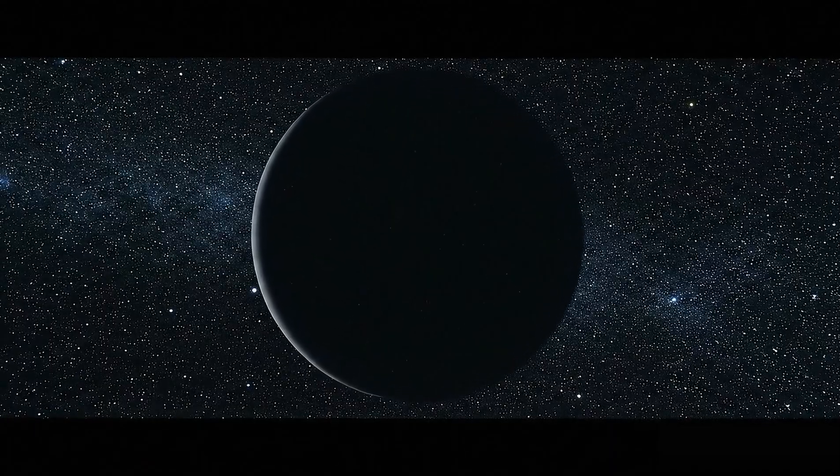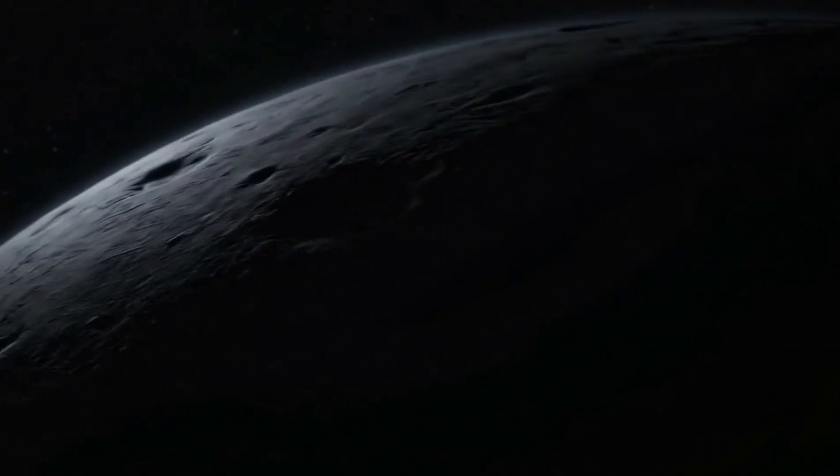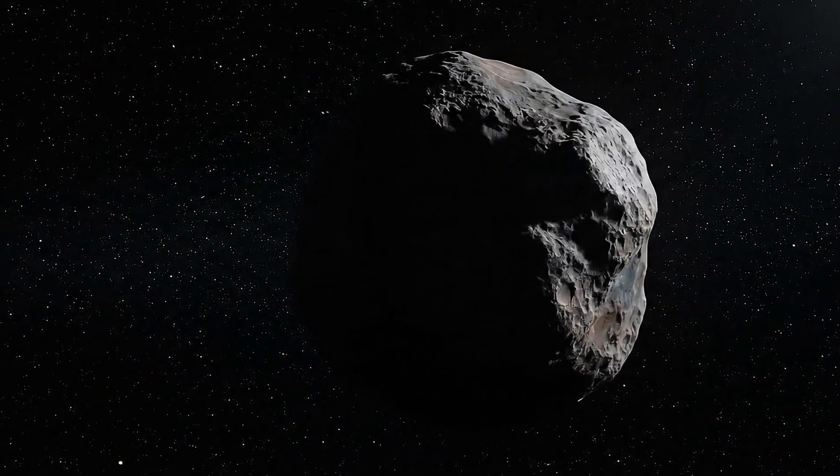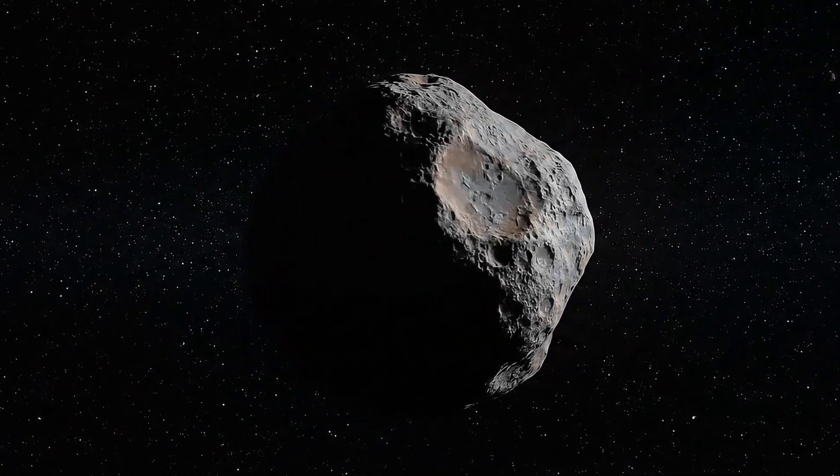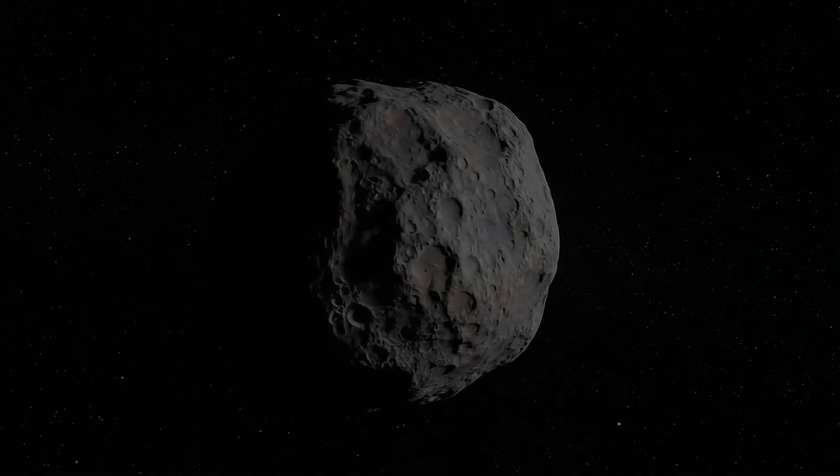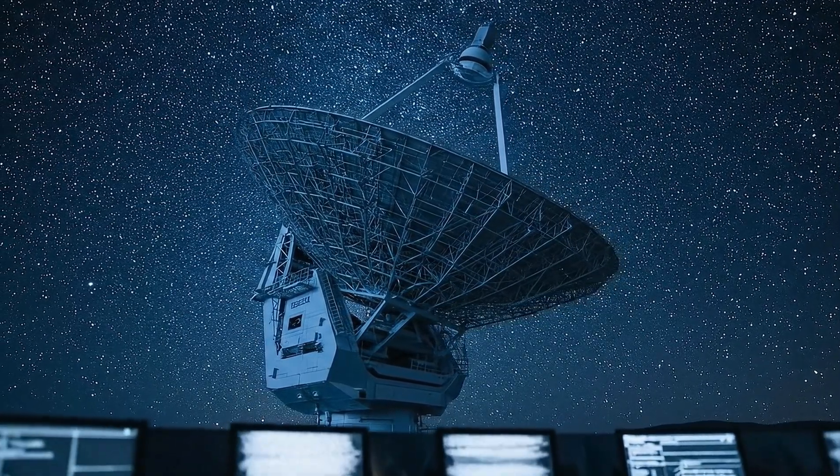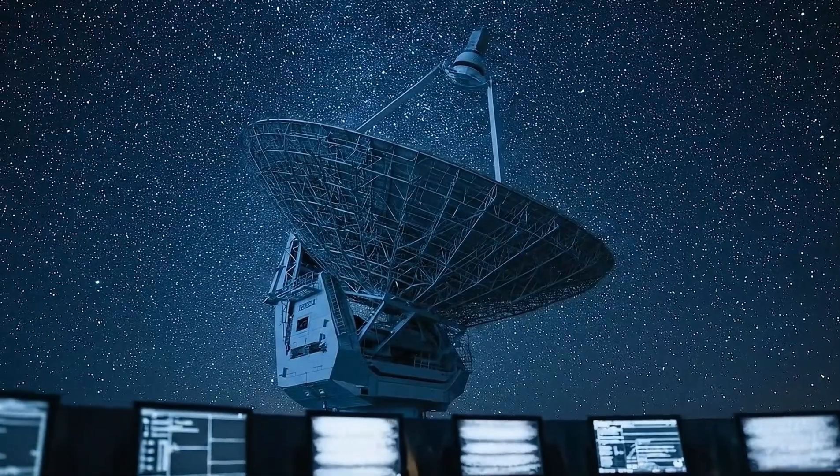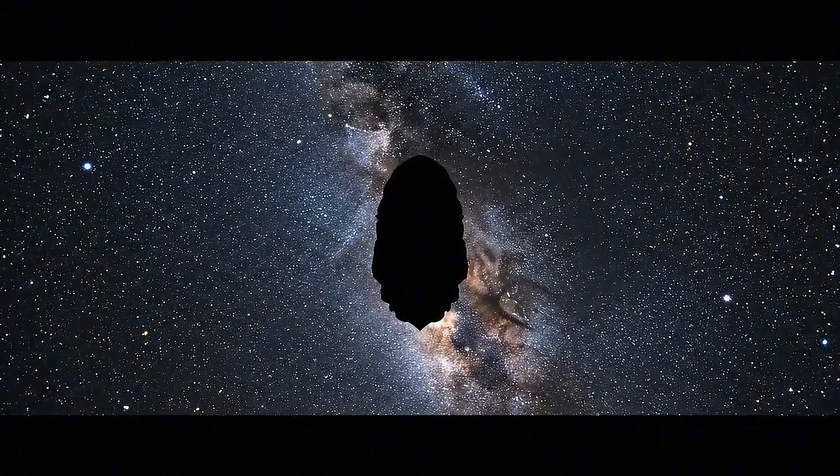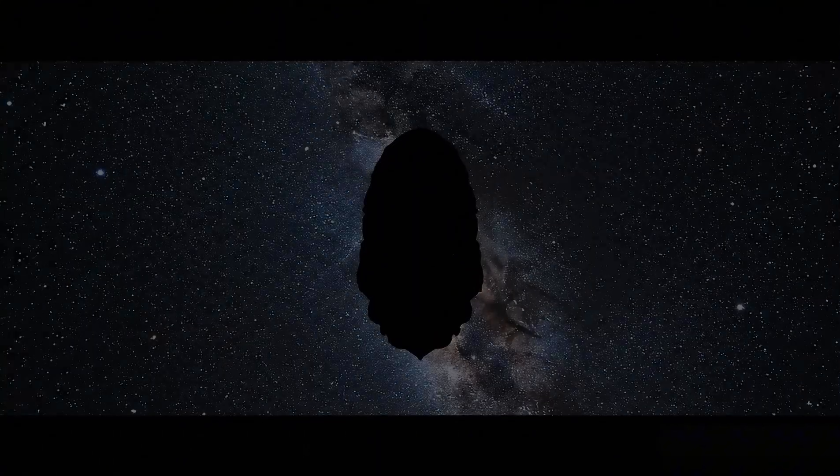Some believe it's coated in ultra-dark material, possibly organic like tholin-rich compounds. Others suggest it has flat surfaces—unnatural, even engineered. Compared to Oumuamua, 3i Atlas is darker and faster. Compared to Borisov, which looked like a comet, this does not. The object emits no gases, shows no tail, no radiation spikes—just cold, hard silence.